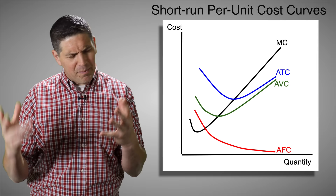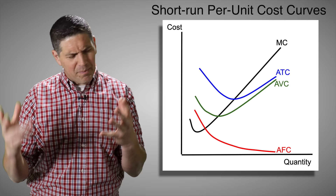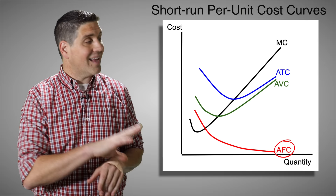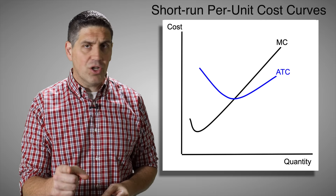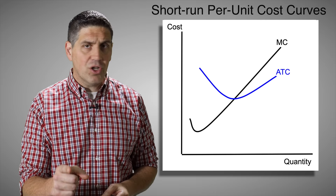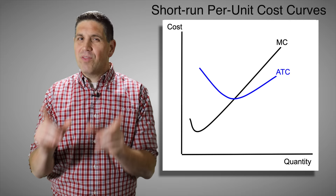When you first learn these, your head was probably spinning, but you soon realize they're not all equally important. Average fixed cost — you're never gonna draw it. Average variable cost you only need if you're trying to find the shutdown point. So really there are only two cost curves you absolutely have to know: marginal cost tells you how much to produce, and average total cost tells you how much profit or loss you're making.